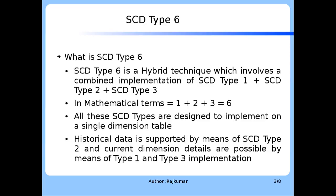SCD Type 6 is a hybrid technique which involves a combined implementation of SCD Type 1, SCD Type 2, and SCD Type 3. These are three different SCD types we have already seen in earlier lessons. In mathematical terms, the summation of 1, 2, and 3 yields the value 6, which is one reason why this technique is named SCD Type 6. All these SCD types are designed to be implemented on a single dimension table in this hybrid technique.